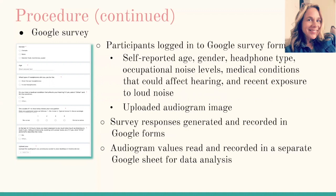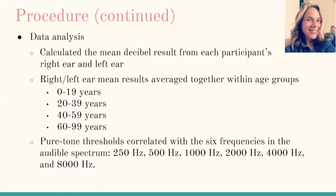We analyzed the data by calculating the mean decibel reading from each participant's right and left ear. The right and left ear mean results were then averaged together within four age groups: 0 to 19 years, 20 to 39 years, 40 to 59 years, and 60 to 99 years old. The pure tone thresholds were then correlated with the six frequencies in the audible spectrum.